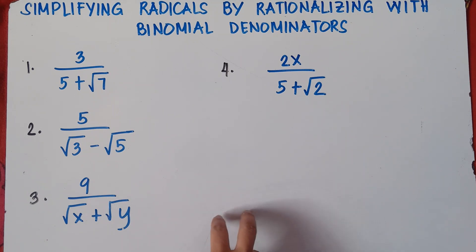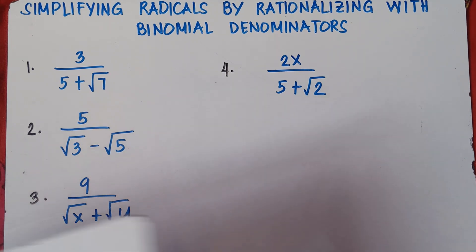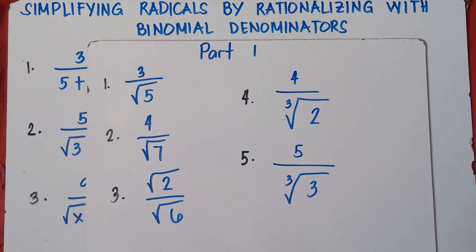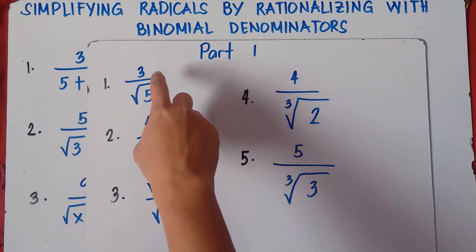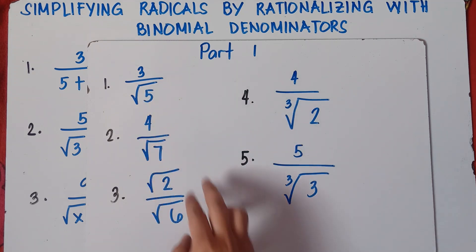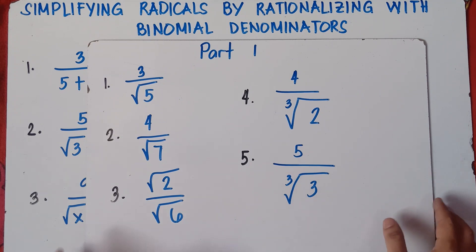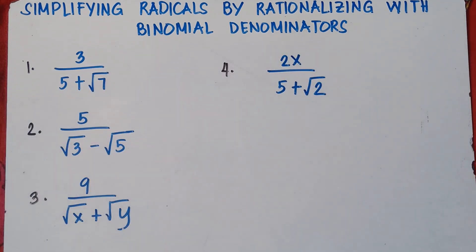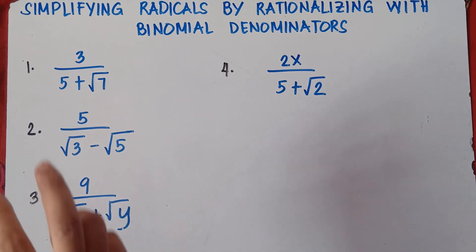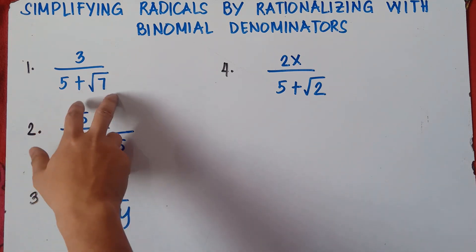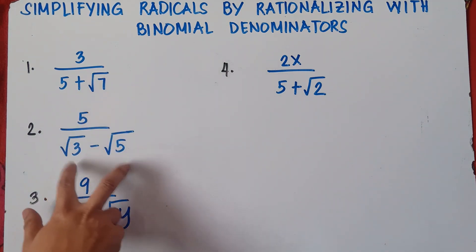This is already Part 2 of our video. In Part 1, we solved basic examples where the denominator consists of only one term, such as 3 over square root of 5. Feel free to see the link in the description below for Part 1. This time, it will be more complicated since our denominator consists of 2 terms — that's why we call them binomial denominators.